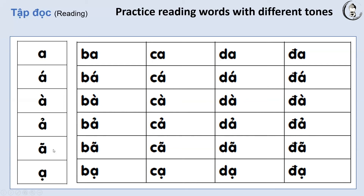This next one is a bit tricky. The tone mark dấu ngã is the hardest for a Vietnamese southerner to distinguish from dấu hỏi. So don't worry too much about it for now, as I have a southern accent, so I may not do a great job sounding it. The letter A with the tilde tone sounds similar to ả, but there is a short break. Ã. Bã. Cã. Giã. Đã.